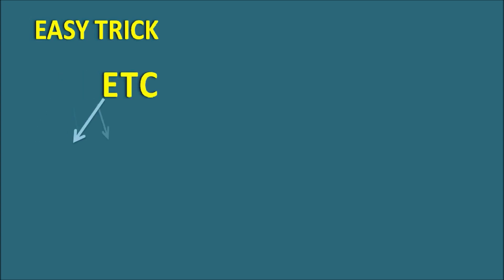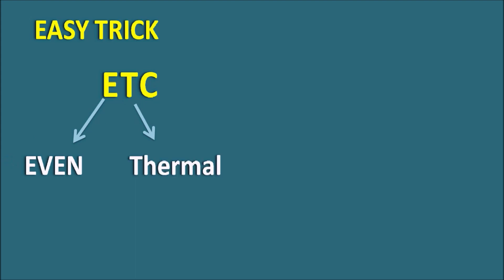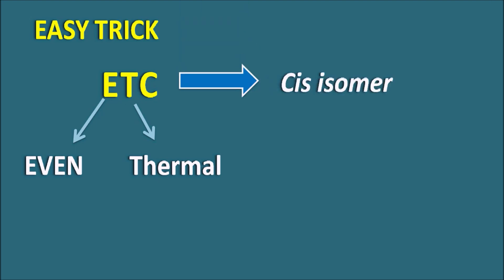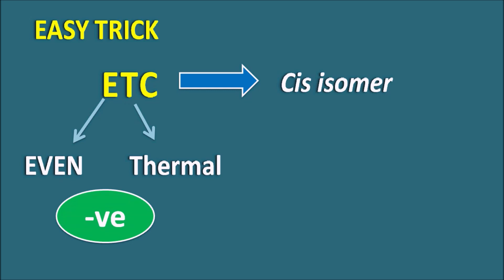We can use an easy trick to guess the configuration of the product — we simply have to remember ETC. E indicates 'even', T indicates 'thermal', and C indicates 'cis isomer'. So even number of pi bonds in the reactant combined with thermal energy as the source gives a product with cis configuration. We can remember: even and thermal combination has a negative value, and when this is negative it gives the cis isomer.